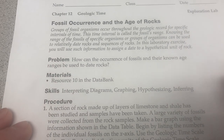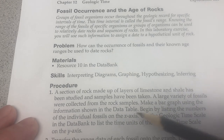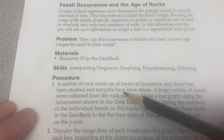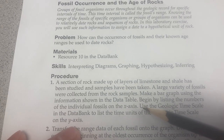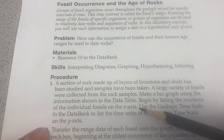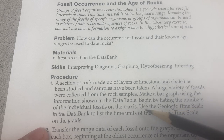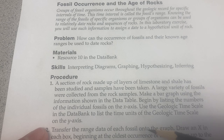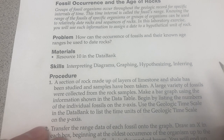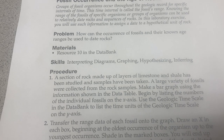A section of rock made up of layers of limestone and shale has been studied and samples have been taken. A large variety of fossils were collected from the rock samples. We need to make a bar graph using the information shown in the data table. Begin by listing the numbers of the individual fossils on the x-axis. Use the geological timescale in the data bank to list the time units on the y-axis.